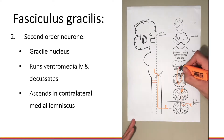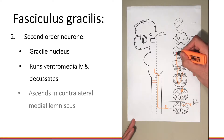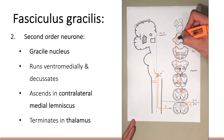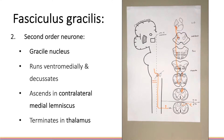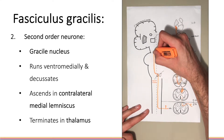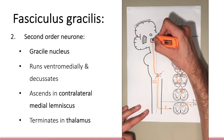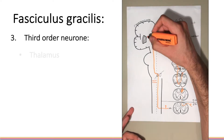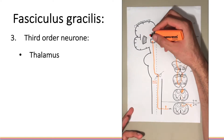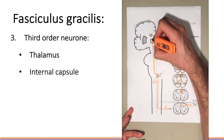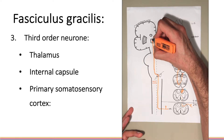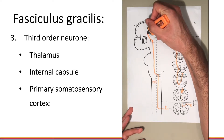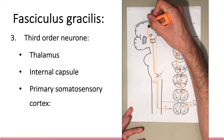The second order neuron then ascends through the brain stem to the ventral posterolateral nucleus of the thalamus where it terminates. In the thalamus, the second order neuron synapses with the third order neuron which ascends via the internal capsule to the primary somatosensory cortex in the postcentral gyrus, located in the parietal lobe.